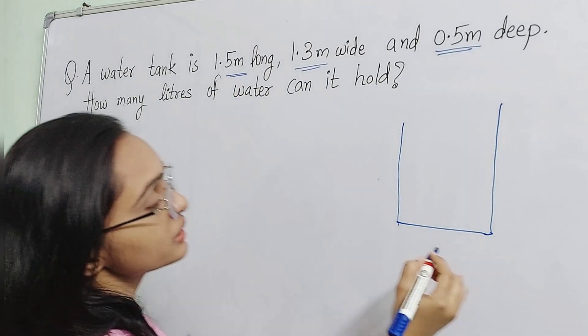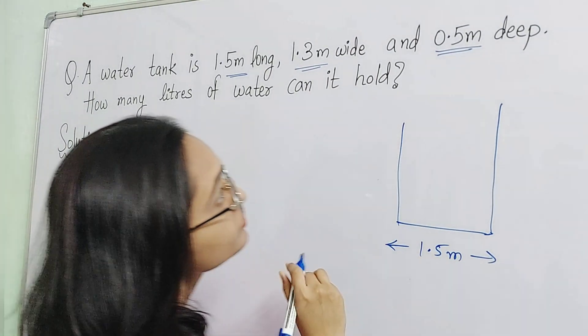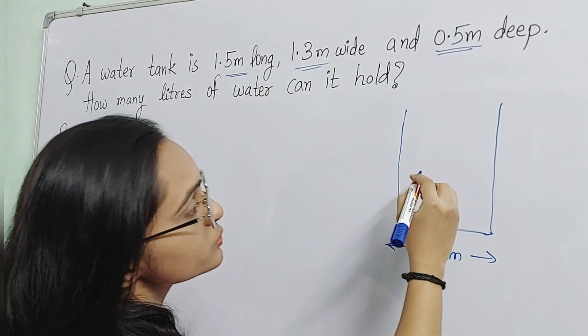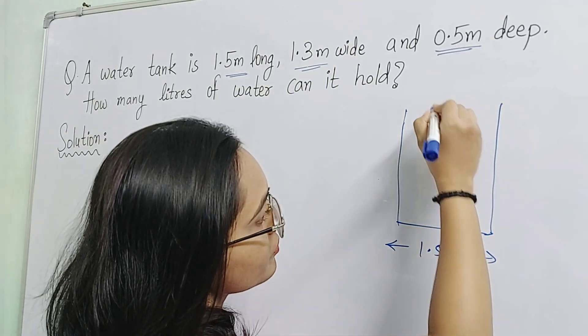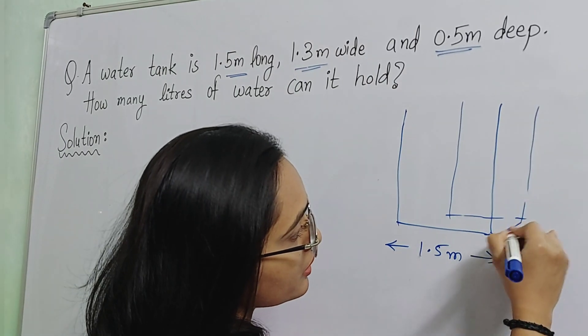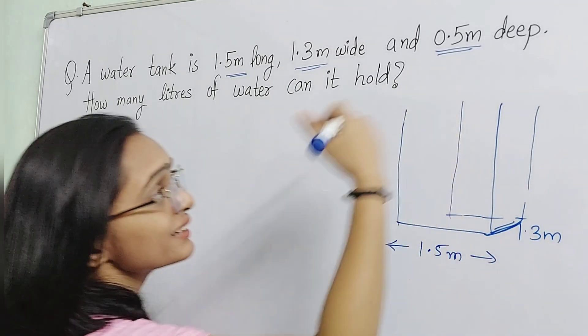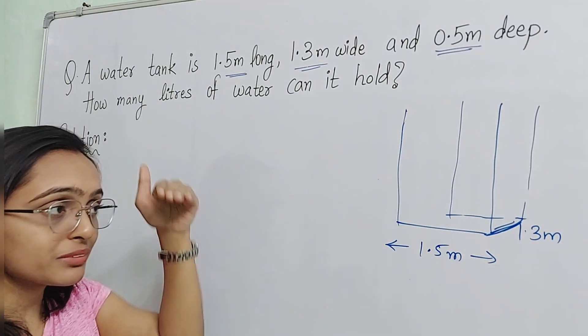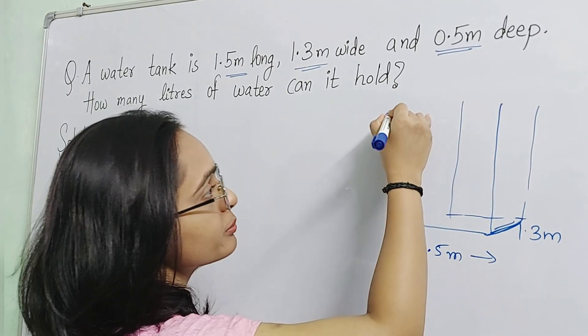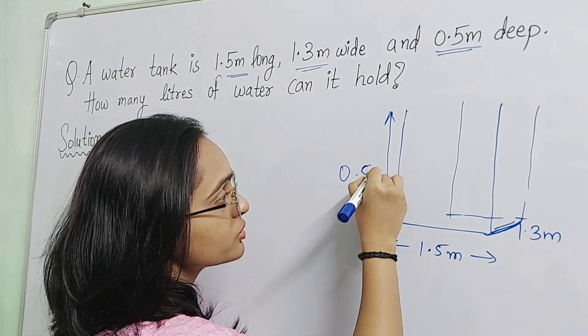It's 1.5 meters long, 1.3 meters width. So, this width is 1.3 meters and 0.5 meters depth. Depth means height. So, depth is 0.5 meters.